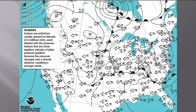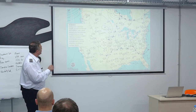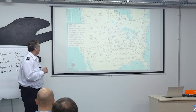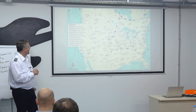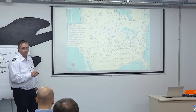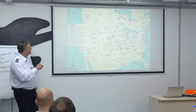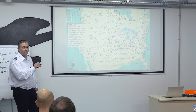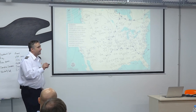Isobars — just a quick review. They're usually spaced at intervals of four millibars, each labeled with the pressure: 1026, 1025, 1024. Isobars that are close together indicate a higher pressure gradient because the pressure changes over a shorter distance, resulting in stronger winds. Most of the winds across this map are very light winds, except up near that low pressure center where the isobars are very close and the winds are very fast.